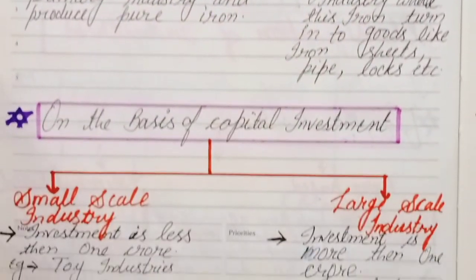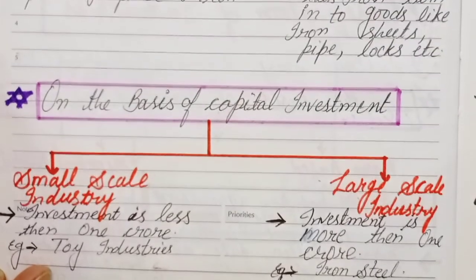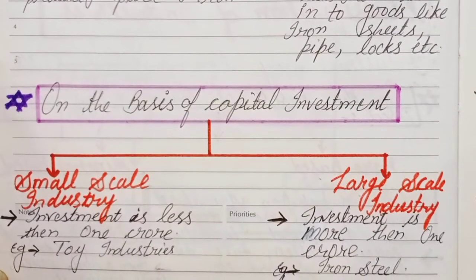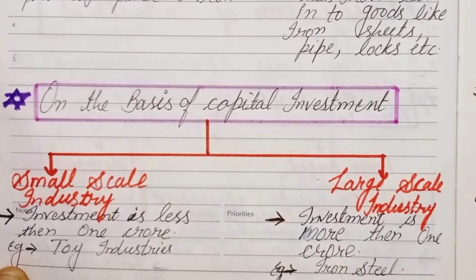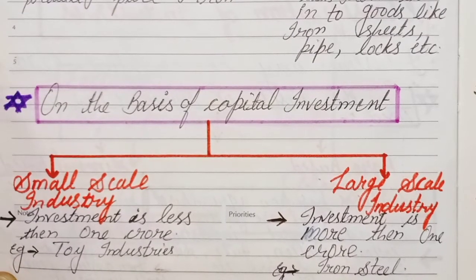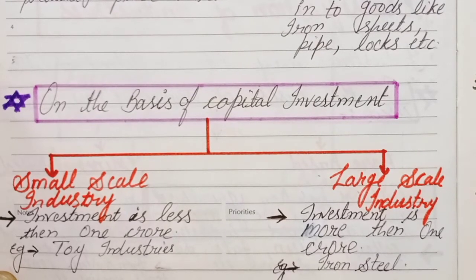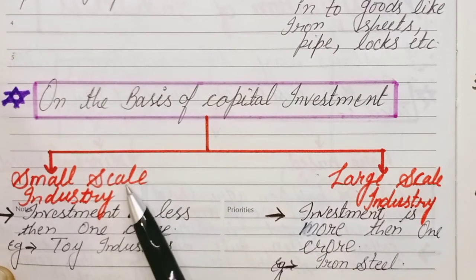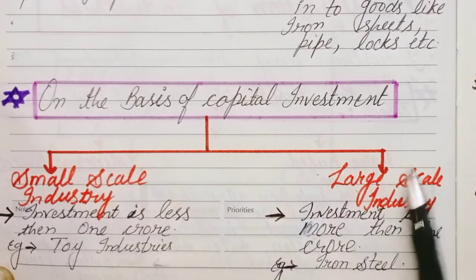Next classification is on the basis of capital investment. Capital refers to the cost or money invested in an industry. On this basis, we divide industries into two categories: small-scale industry and large-scale industry. Where less capital is invested, it is a small-scale industry, and where more capital is invested, it is a large-scale industry.